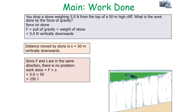A stone weighing 5 newtons is dropped from the top of a 50-metre-high cliff. What is the work done by the force of gravity? The force equals the weight of the stone, which is 5 newtons downwards, and the distance moved is 50 metres vertically downwards. Because the force and displacement are in the same direction, work done equals force times displacement: 5 times 50 equals 250 joules.